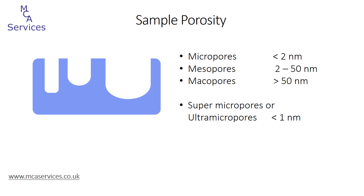These size ranges, shown on the right-hand side, are referred to as the IUPAC classification of pore sizes, and this is the most common. The dimensions refer to the diameter of a cylindrically shaped pore or the width of a slit-shaped pore. It's also becoming more and more common to refer to the very smallest pores — pores smaller than one nanometre diameter or width — as super micropores or ultra micropores.